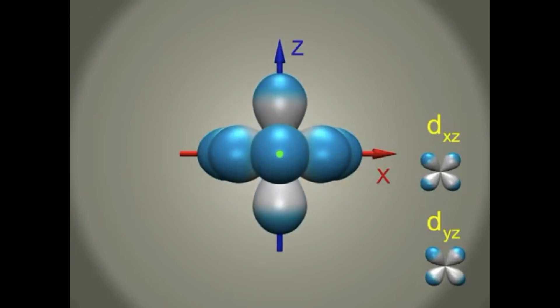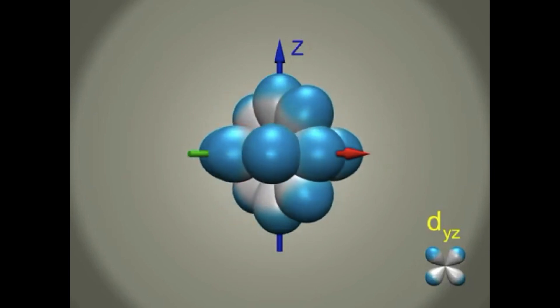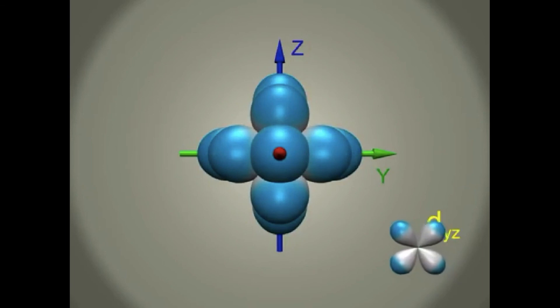The next one is D-X-Z. The orbital is in the middle of X and Z-axis. And the final one is D-Y-Z. The orbital is in between Y and Z-axis.